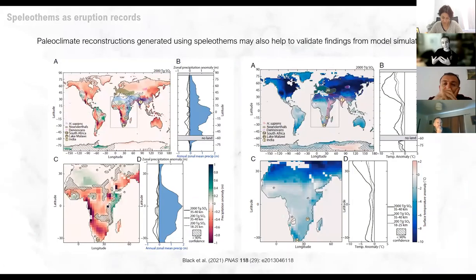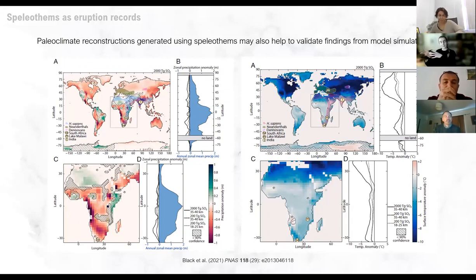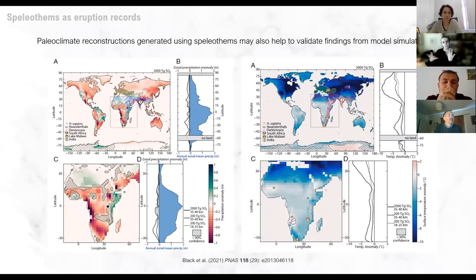We may also be able to use stalagmites to validate climate models. A paper published this year looking at the climate implications of the Toba eruption validated their model inputs using paleoclimate records including stalagmites, lake records, and ice records. The more stalagmites we have for this purpose, the more they may be able to supplement these models, allowing us to refine input parameters and get a better idea of how different facets of the climate system respond to volcanic forcing of different magnitudes — meaning different sulphur loads, different timescales of eruption, and all these sorts of things.